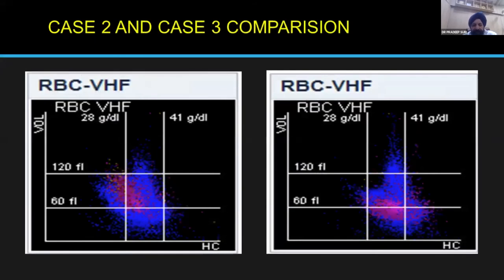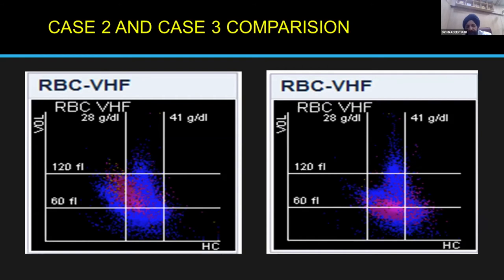Juxtaposing the two scatterplots side by side: the iron deficiency anemia on the left shows much wider scatter going both towards hypochromia and microcytosis — both left and downward. Whereas the beta-thalassemia on the right is going only downward, hardly moving to the left at all. This is one easy way to differentiate beta-thalassemia trait from iron deficiency anemia. However, with a caveat: in the Indian situation, sometimes you can encounter both conditions together, in which case this distinction will not work.